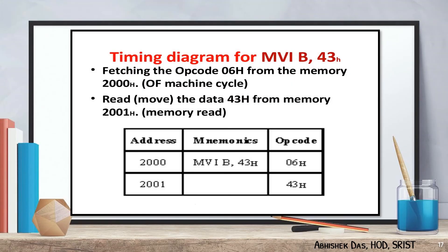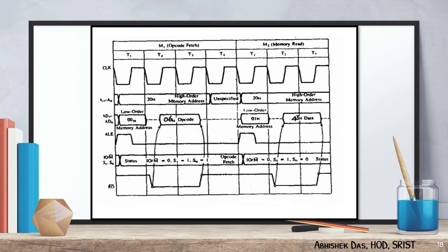A few more examples: MVIB, 43. MVIB 43 has a starting address of 2000. The opcode of MVIB is 06, and the next location is 2001, so 43 is placed at location 2001. This is a 2-byte instruction. The timing diagram of MVIB 43 shows that a total of 7T-states are required: 4 for opcode fetch and 3 for memory read.